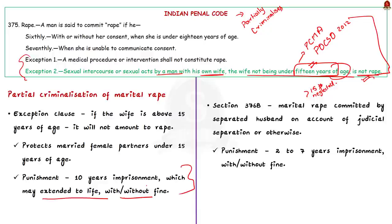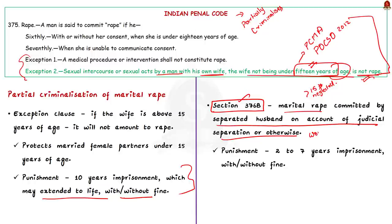The IPC only partially criminalizes marital rape. First, when the wife is below 15 years of age, it is punishable with up to 10 years of imprisonment, which may extend to life imprisonment. Second, under Section 376B, which deals with marital rape committed when the woman is living separately on account of judicial separation — the punishment is two to seven years of imprisonment with or without a fine. Due to this partial criminalization, many petitions have been filed to fully criminalize marital rape covering all ages of women.